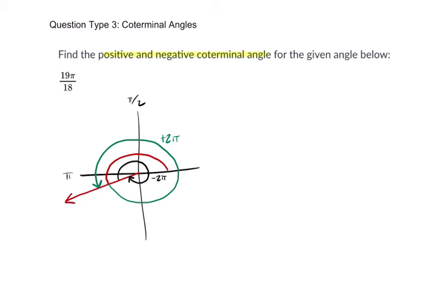And let's do that. So we have our positive example first: 19π over 18 plus 2π, which is really the same thing as 19π over 18 plus 36π over 18. Get those common denominators, and that's 55π over 18.